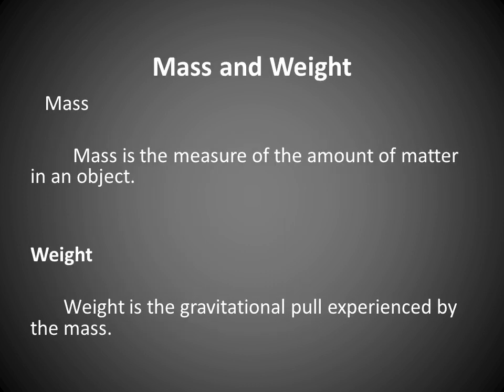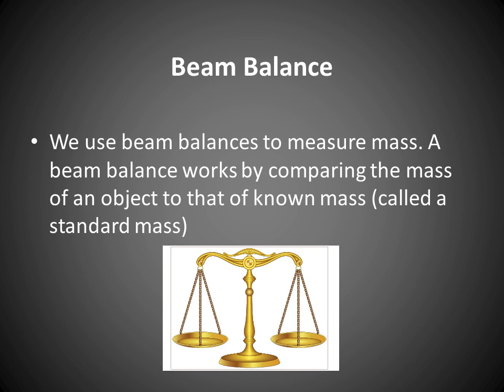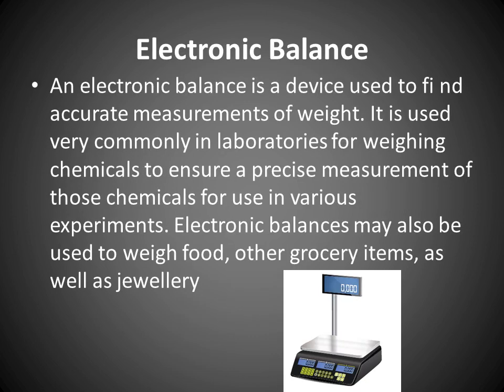Mass and weight: Mass is the measure of the amount of matter in an object. Weight is the gravitational pull experienced by the mass. The SI unit of mass is kilogram, represented by kg. 1000 milligrams equals 1 gram, 1000 grams equals 1 kilogram, 1000 kilograms equals 1 ton. A beam balance works by comparing the mass of an object to that of a known mass, called a standard mass. An electronic balance is a device used to find accurate measurements of weight. It is used in laboratories for weighing chemicals to ensure precise measurement for use in various experiments. Electronic balances may also be used to weigh foods, grocery items, and jewelry.